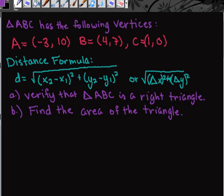For this example, we're going to look at using the distance formula to help us verify that triangle ABC is a right triangle. We are given the coordinates of our vertices: A is at (-3, 10), B is at (4, 7), and C is at (1, 0).